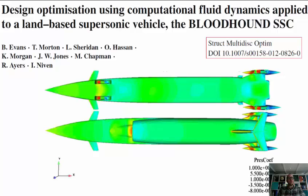In this short summary video I'm going to, in hopefully under five minutes, give you an overview of the work presented in a paper published back in 2013 in the Journal for Structural and Multidisciplinary Optimization titled Design Optimization Using Computational Fluid Dynamics Applied to a Land-Based Supersonic Vehicle, the Bloodhound Supersonic Car. This was a piece of collaborative work